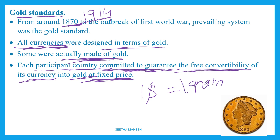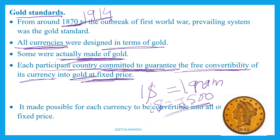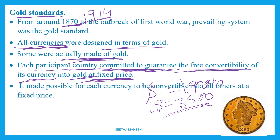For example, if 1 gram of gold is worth 500 rupees, then $1 is equal to 500 rupees. Once that is fixed, they convert. It made possible for each country to have convertibility into all others at a fixed price.